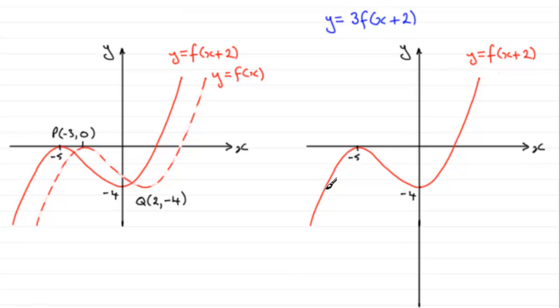Well, if we take our graph of y equals f of x plus 2, when we stretch it by a scale factor of 3 parallel to the y axis, the point here stays invariant. Points on the x axis stay invariant, so they don't move. That's this point here at minus 5, 0. This point here stays put.